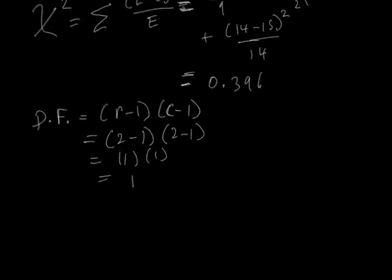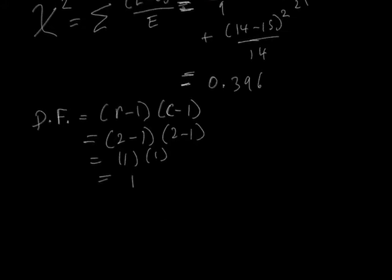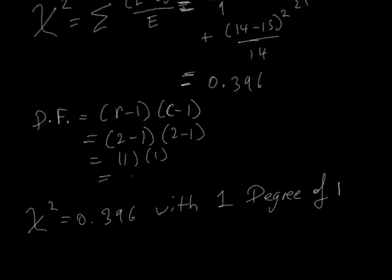Putting these two pieces of information together, our chi-squared statistic is 0.396, with 1 degree of freedom.